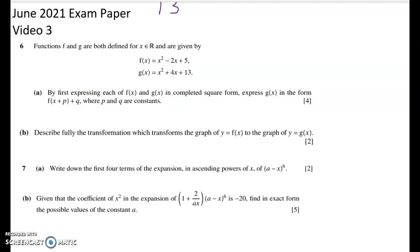In the first question we're given two quadratics, f(x) and g(x), and we're going to have to link them up together. By first expressing each of f(x) and g(x) in completed square form, express g(x) in this form. In other words, get g(x) as a transformation of f(x). You can do this with algebra, but you can also do this by thinking about the graph, and that's what they want you to do in part b. Describe fully the transformation which transforms the graph of f(x) to the graph of g(x).